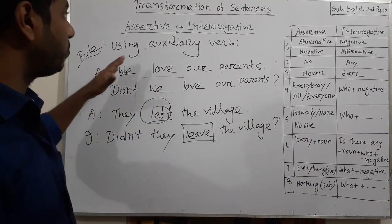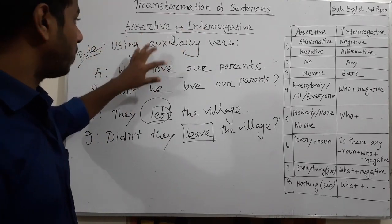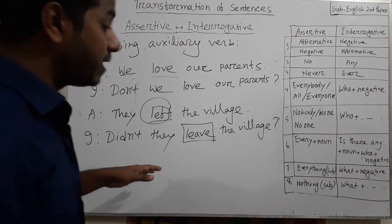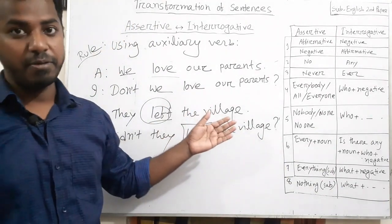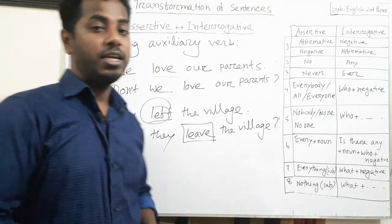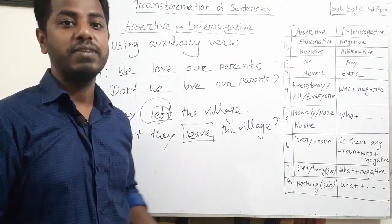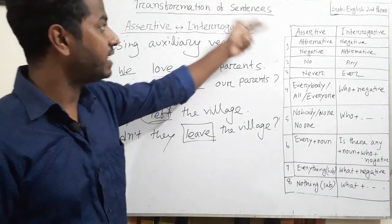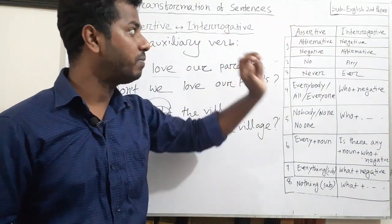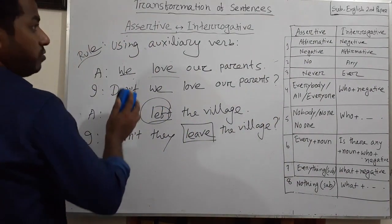Let me revise rule one for better understanding. If there is an auxiliary verb in assertive sentence, write the auxiliary verb at the beginning before the subject to make it interrogative. If there is no auxiliary verb, bring do or does for present indefinite tense, and did for past indefinite tense. If assertive sentence is affirmative, interrogative will be negative. If assertive sentence is negative, interrogative will be affirmative. I hope you have understood the first rule.